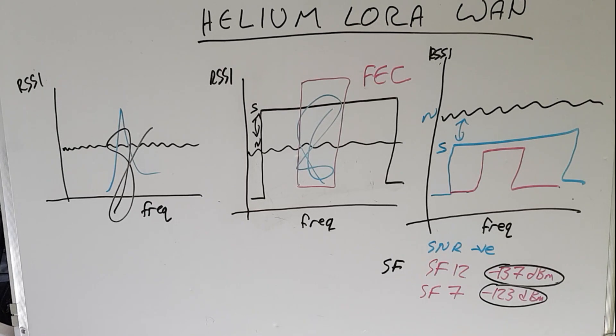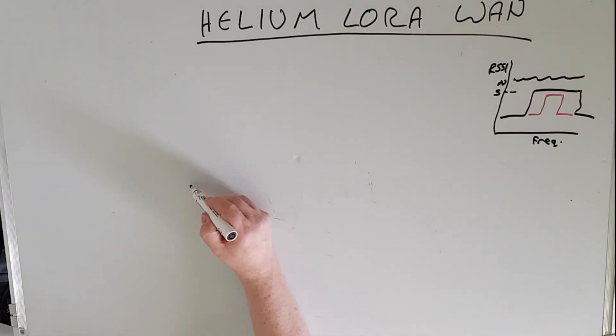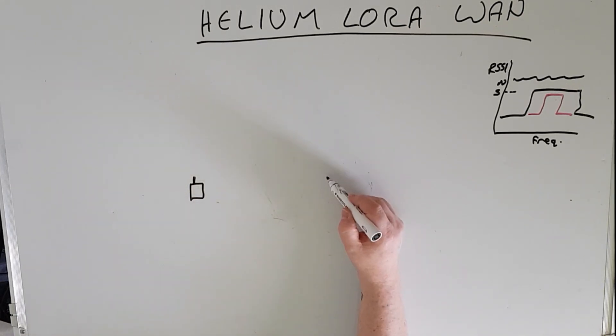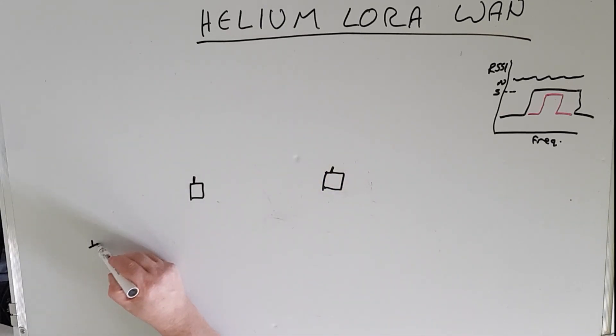So what does this have to do with getting more witnesses and earning more HNT then? Well, as an example, let's say we had a miner here, another one over here, and perhaps a third one over here as well.